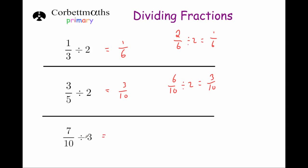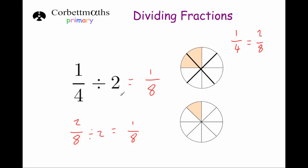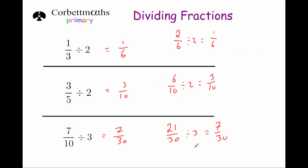One more example: 7 tenths divided by 3. The numerator 7 isn't divisible by 3, so using the shortcut I treble the denominator to get 7 over 30. To show it with equivalent fractions: 7 over 10 equals 21 over 30, and 21 thirtieths divided by 3 is 7 thirtieths — the same answer. So to summarise: if the numerator is divisible by the number you're dividing by, just divide the numerator. If it isn't, you can simply multiply the denominator by the number you're dividing by, or use equivalent fractions and then divide — both give the same answer.